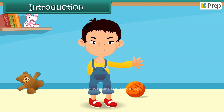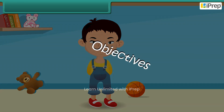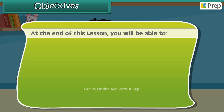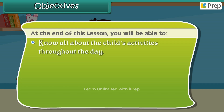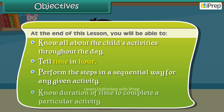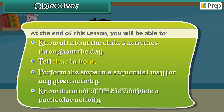Now let me tell you something about my daily routine. Work objectives: at the end of this lesson, you'll be able to know all about the child's activities throughout the day, tell time in hours, perform the steps in a sequential way for any given activity, and know the duration of time to complete a particular activity.